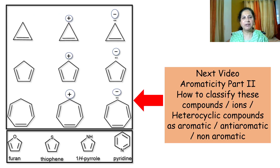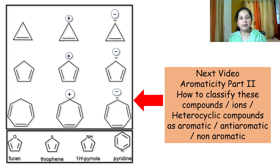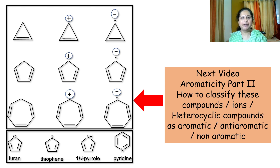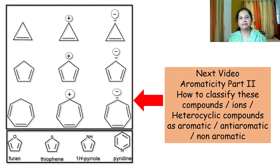We have solved simple examples on aromaticity. But what about compounds, ions and heterocyclic compounds shown here? Don't worry — in the next video we will solve all these examples. If you like this video, please subscribe to my channel and press the bell icon for notifications. I will come up with the next video on aromaticity.